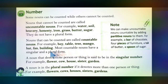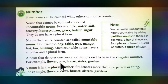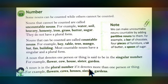Most countable nouns have a singular and a plural form. A noun that denotes one person or thing is in the singular number. For example: flower, cow, house, sister, garden. A noun is in the plural number if it denotes more than one person or thing. For example: flowers, cows — notice the 's' added after the word, indicating plural number.